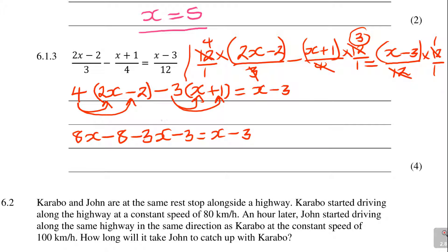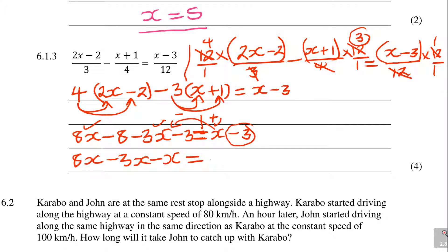Then collect like terms — x terms on the left, numbers on the right. So you have 8x minus 3x on the left. The x from the right side jumps the equal sign and becomes minus x. On the right side, you already have minus 3. Negative 8 jumps the equal sign and becomes positive 8. Negative 3 also jumps and becomes positive 3. Small things but they mean a lot.